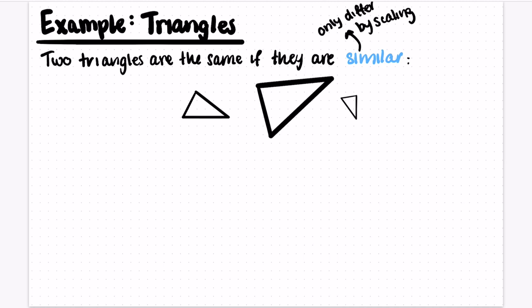But as long as they only differ by scaling, then those two triangles are similar. And I'll quickly just write here the names of a couple of theorems that you might remember for showing that two triangles are similar.